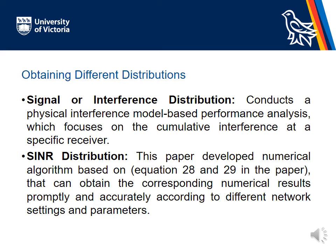To obtain different distributions, this paper derives the signal and interference distributions. It conducts a physical interference model-based performance analysis, focusing on cumulative interference at a specific receiver. For the SINR distribution, the paper develops a numerical algorithm based on equations 28 and 29 in the paper, which can obtain corresponding numerical results promptly and accurately according to different network settings and parameters.